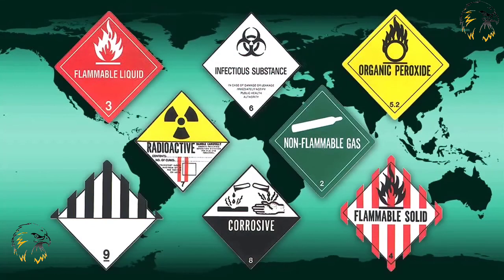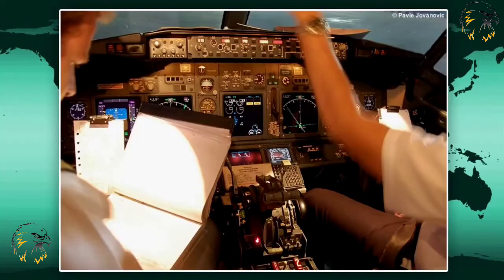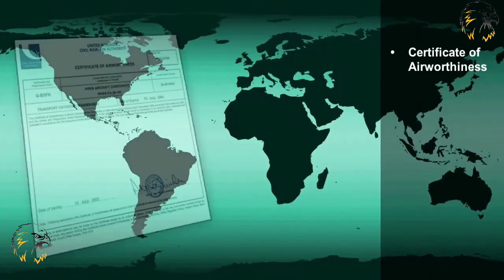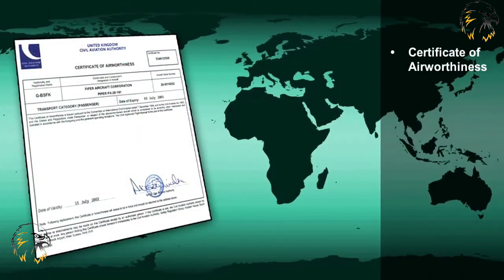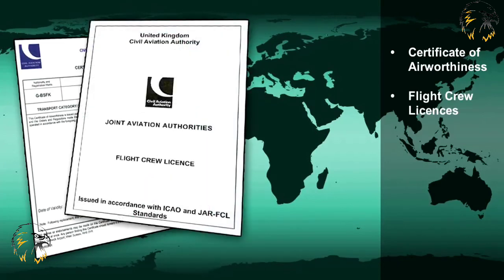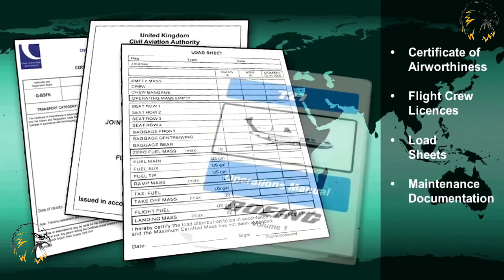Another specific duty worthy of mention is the duty of member states to comply with the standards for the safe carriage of dangerous cargo. Annex 18 of the Chicago Convention details extensively the technical instructions surrounding this activity. Finally, member states are also duty-bound to specify what documentation is to be carried on a commercial flight. Documentation must include Certificate of Airworthiness, flight crew licenses, load sheets, and maintenance documentation.